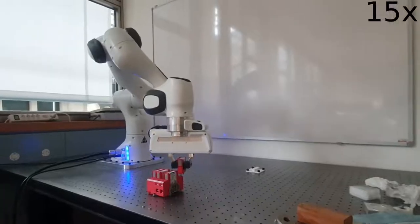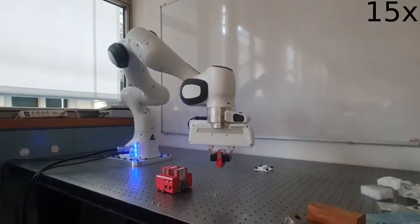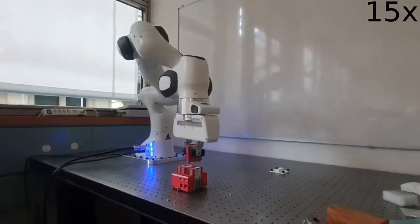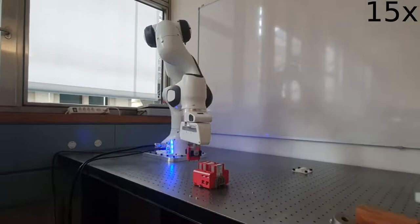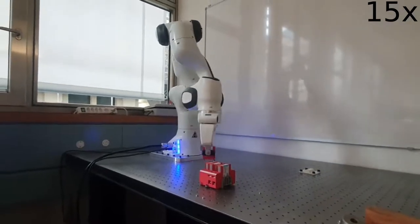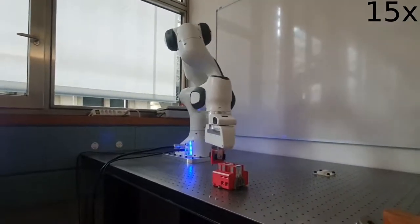It can estimate both the object pose with respect to the robot's base frame and the in-hand pose of a grasped object by fusing contact measurements derived from joint torque readings with a particle filter.